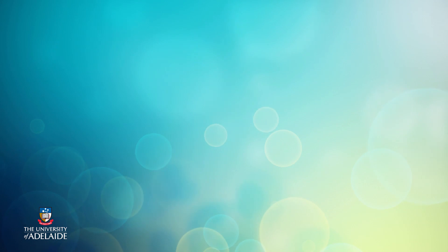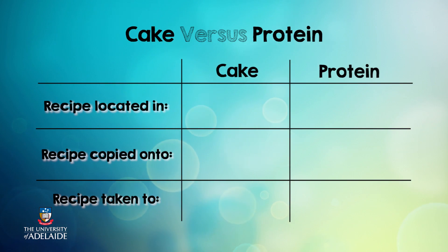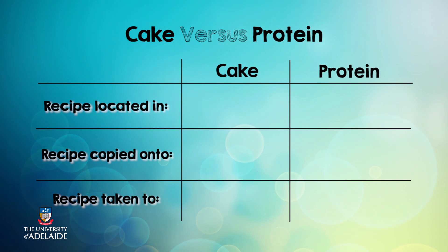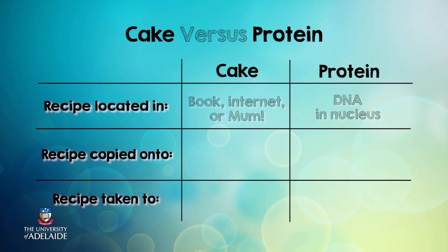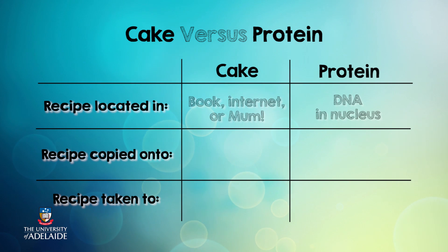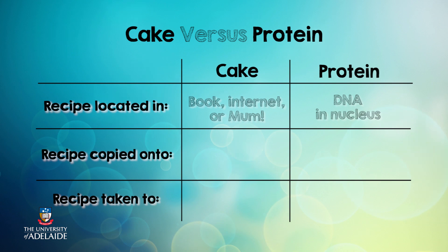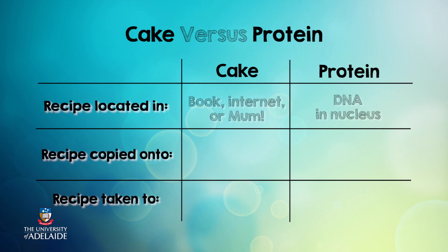But enough with explaining why proteins are important — let's spend the rest of this video comparing the process of protein production with the process of making a cake. To make a cake, you first need instructions or a recipe. You can find recipes in a recipe book, the internet, or in your mum's brain if you ask her nicely enough. To make a protein, you also need instructions. These instructions are stored in DNA in the nucleus.